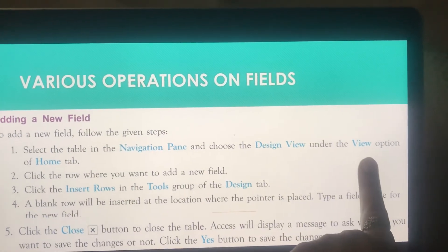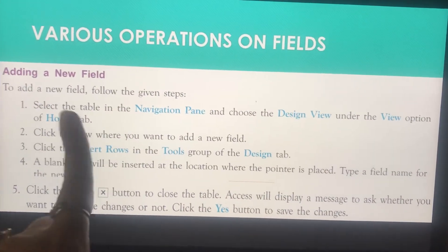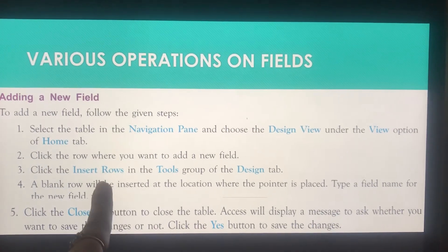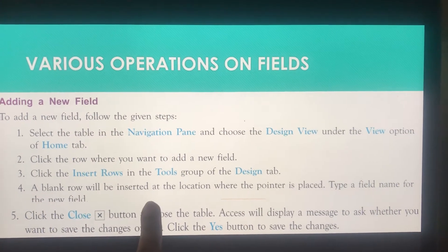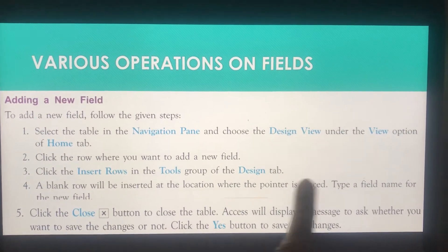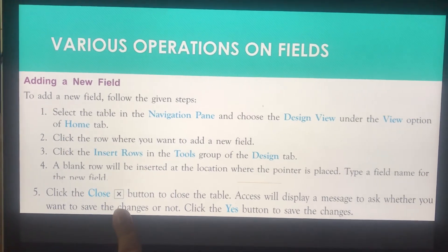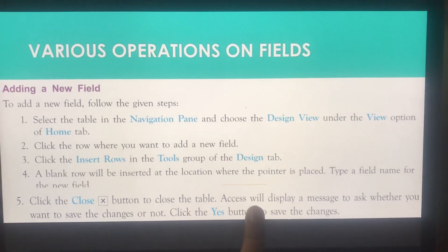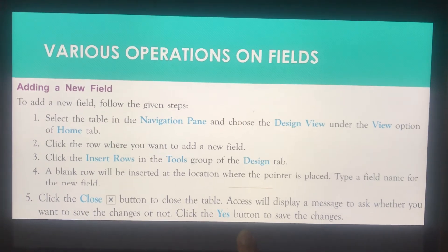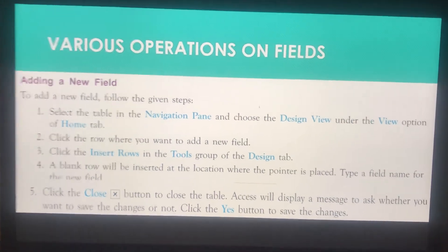To add a new field, first select the table in the Navigation Pane and choose Design View from the View option in the Home tab. Then click the row where you want to add the new field. In the Design tab, go to the Tools group and click Insert Rows. A blank row will be inserted at the location where the pointer is placed. Type the name of the new field, then click the Close button to close the table.